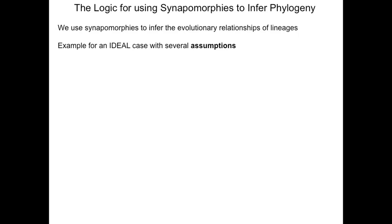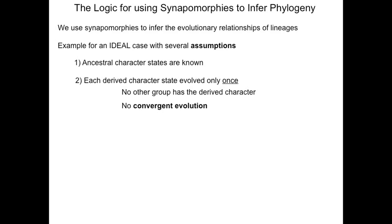For the hypothetical scenario, we consider an ideal case of evolution. We assume that we know the ancestral character states, and we assume that each character is derived only once — that there is no convergent evolution. We also assume that once evolved, a derived character state is never lost. There are no reversals.